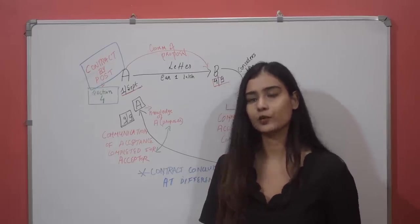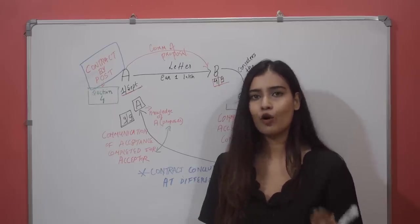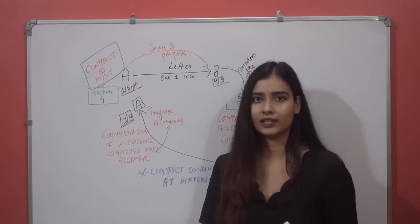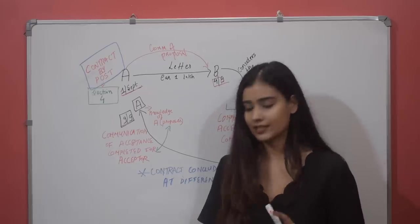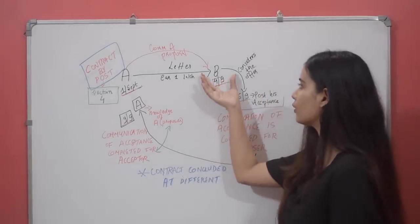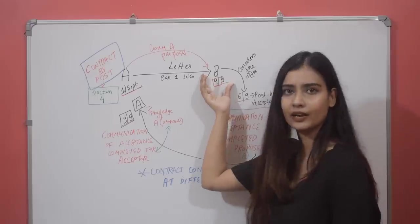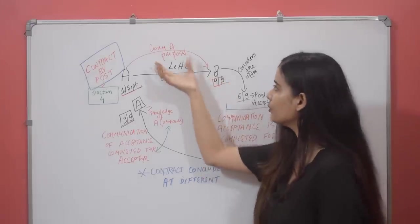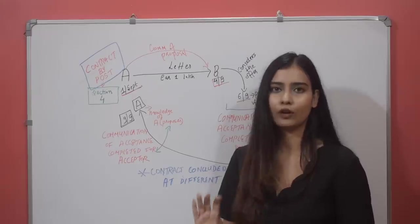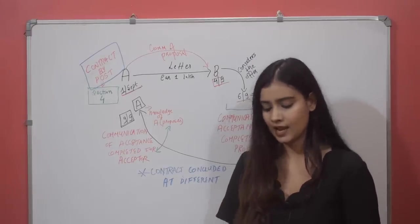Proposal ka communication us waqt khatam ho jaata hai jab aapne jisko offer diya hai, uske knowledge mein wo offer aa jaaye. Simply, yahi matlab hai first line ka — ki jab B ko letter mil jaayega, to communication of proposal yahin pe khatam ho gaya. This is the meaning of your first line, which is very simple and not very complicated.